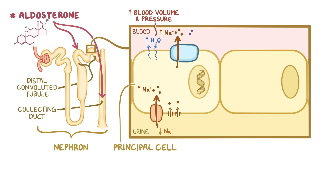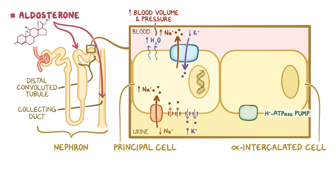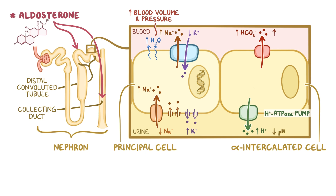At the same time, the pumps drive potassium in the opposite direction — from the blood into the cells, and from there it flows down its concentration gradient into the tubule to be excreted in urine. The other function of aldosterone is to stimulate the proton pumps, H⁺-ATPase pumps, in alpha-intercalated cells, causing more protons to be excreted into the urine, making it more acidic — in other words, aldosterone causes a decrease in urine pH. Meanwhile, ion exchangers on the basal surface move bicarbonate ions into the extracellular space, causing an increase in blood pH.